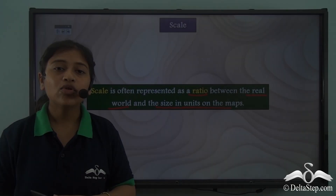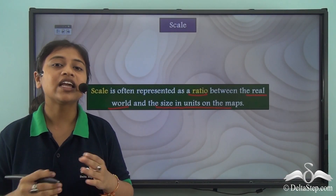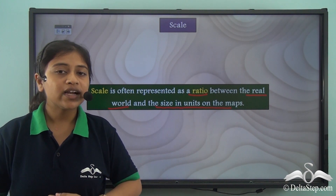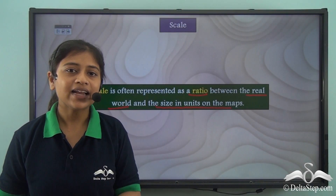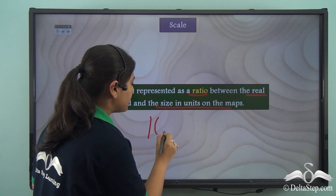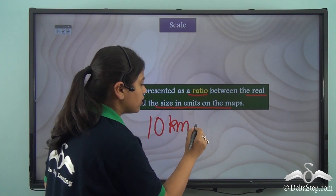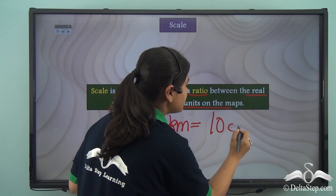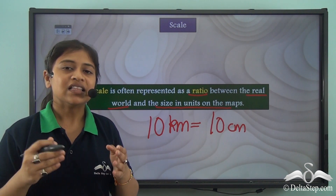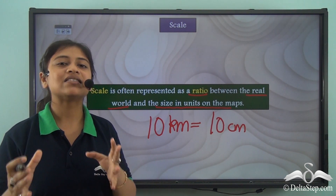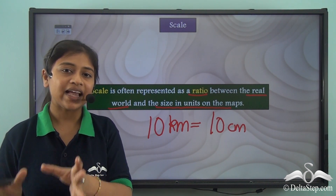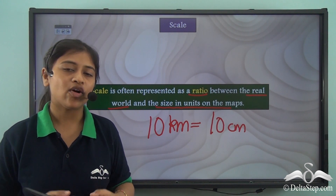Say for example I want to study a particular area which has a length of 10 kilometres. I cannot put the entire 10 kilometres on the map. So I decide to take 10 kilometres on the ground as 10 centimetres on the map. So for me, 10 kilometres on the real ground will be equal to 10 centimetres on the map. This makes it very easy to study that particular area. A scale makes the study of the real ground easier because with the help of units we can map that real area on the maps and then carry on with our study.